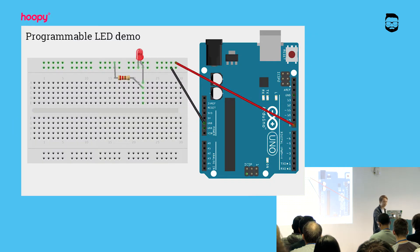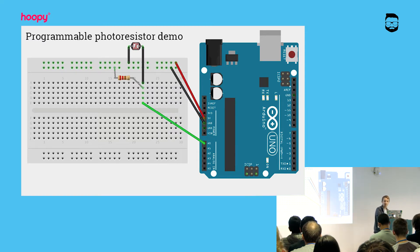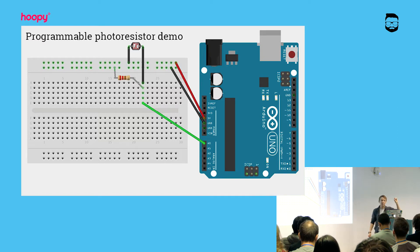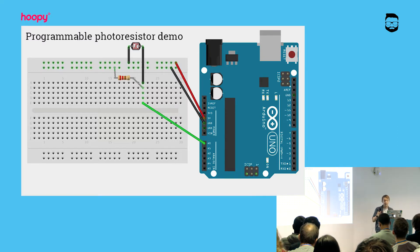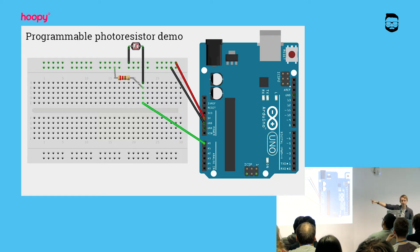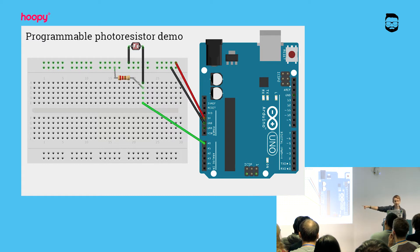Let's try one more example: reading input. We're going to use a photo resistor — a resistor that changes its resistance depending on the amount of light. One thing to watch out for: you might think you just run voltage through it into your analog read pin, but those pins measure voltage, not resistance. So to get a voltage that changes as the resistance changes, you need a voltage divider circuit: constant voltage goes through the photo resistor, then the circuit splits — half goes through another resistor to ground, and the other half goes into the analog pin. The ratio of the resistances is what changes the voltage.